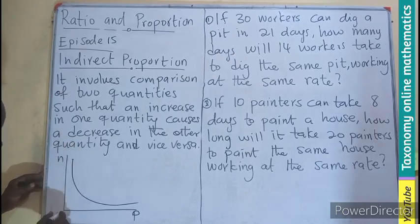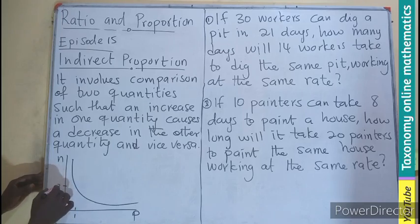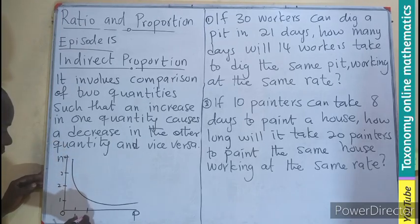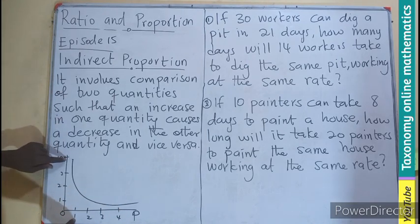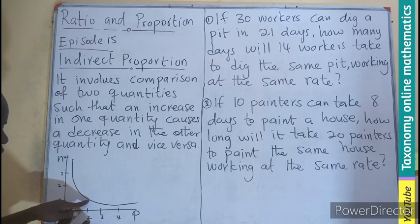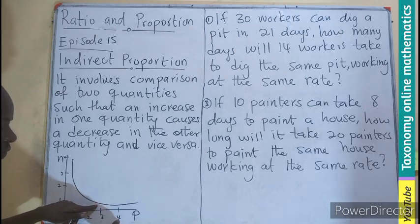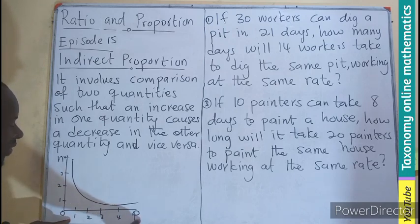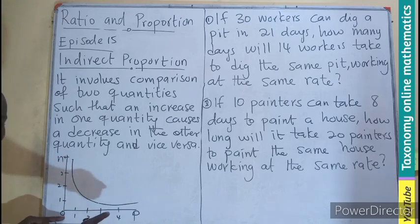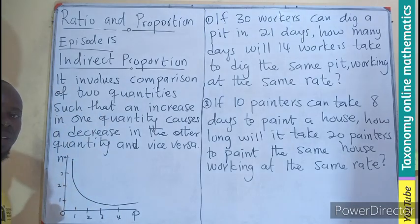Let's take this as the beginning point. Zero will be here. If I have 1 here, I can have 1, 2, 3, and 4. So if the first point is 1 and 4, if I increase from 1 to 2, this is going to decrease and come to somewhere 1.5. As I increase to 3, the 1.5 will also decrease. If you move to 4, it will decrease further below 1. So as p is increasing, then n is decreasing. That is a representation of indirect variation, or indirect proportion.